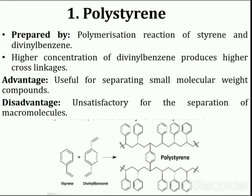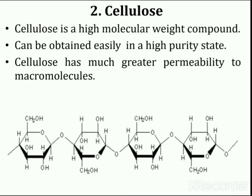Polystyrene resins are very useful for separating small molecular weight compounds. However, they are unsatisfactory for the separation of macromolecules. Next is cellulose. This is the structure of cellulose. Cellulose is a high molecular weight compound which can be readily obtained in a high purity state. Cellulose has much greater permeability to macromolecules.